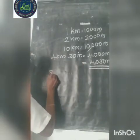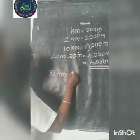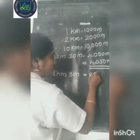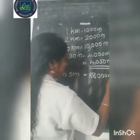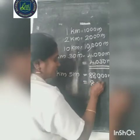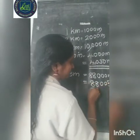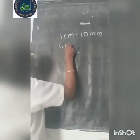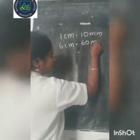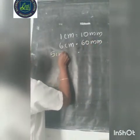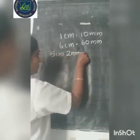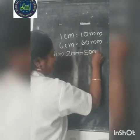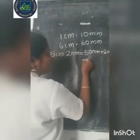One more question: 88 kilometer 5 meter. We know that 88 kilometer is equal to 88,000 meter. 88,000 meter plus 5 meter equals 88,005 meter. Next: 1 centimeter is equal to 10 millimeter. Therefore, 6 centimeter is equal to 60 millimeter. And 5 centimeter 2 millimeter: 5 centimeter equals 50 millimeter, plus 2 millimeter equals 52 millimeter.